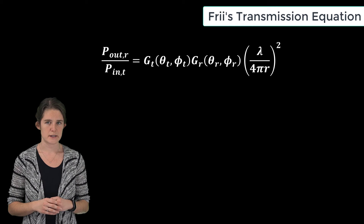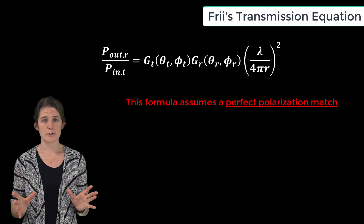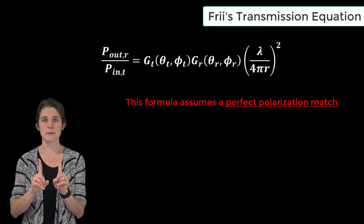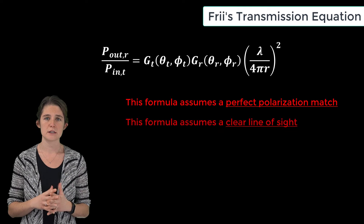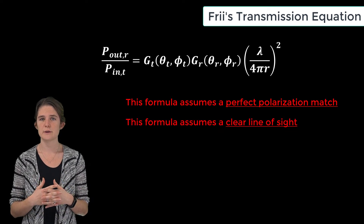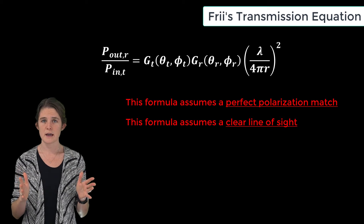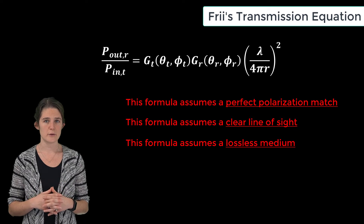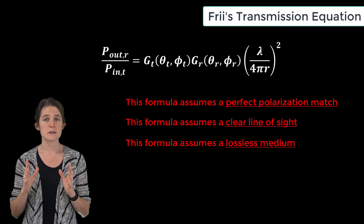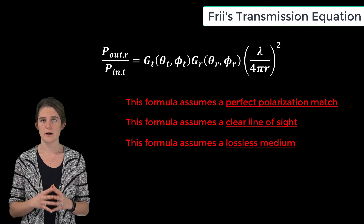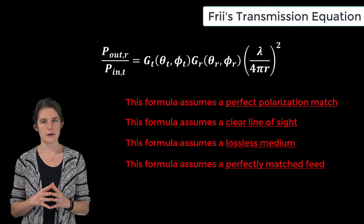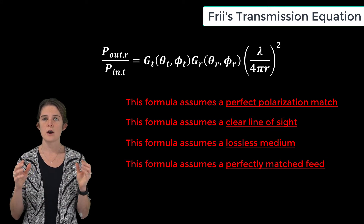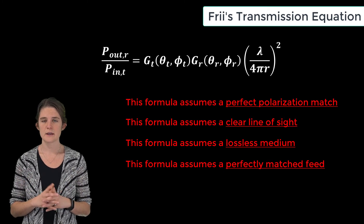The Friis transmission formula as stated here neglects a few factors. For instance, it says nothing about polarization mismatch — it assumes that the polarizations of the two antennas are perfectly matched. It also does not account for the possible presence of obstructions; it assumes a perfectly homogeneous environment with a clear line of sight between the antennas. Additionally, it does not account for wave attenuation due to material losses, assuming the medium is perfectly lossless. Finally, it does not account for non-ideality in the feed, assuming both antennas are perfectly matched to their feed lines.